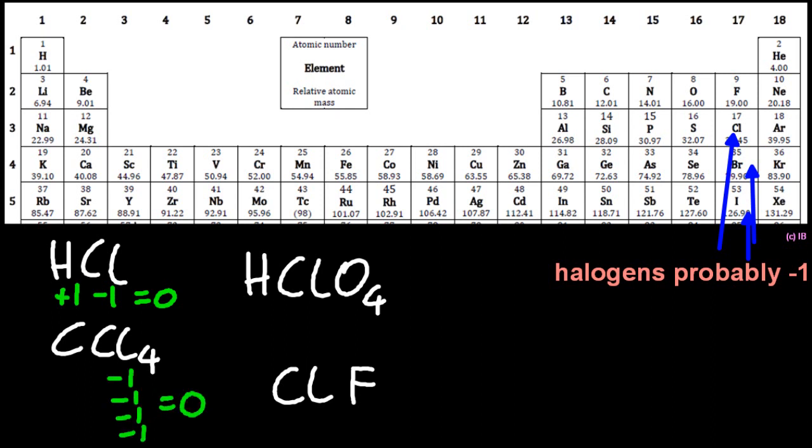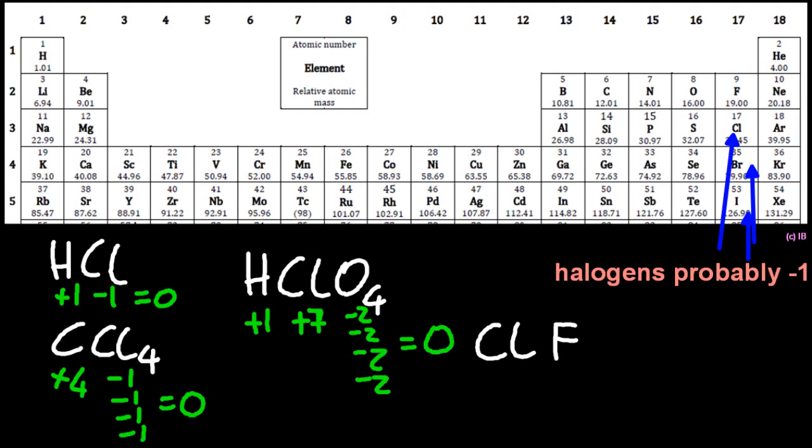Yeah, minus one all the way through. But with HClO4, you're going to come unstuck. I know there's a rule for hydrogen and oxygen. Chlorine minus one, you know that doesn't work. Chlorine is the one that's flexible. That's going to actually be plus seven.